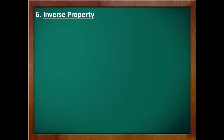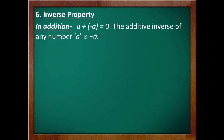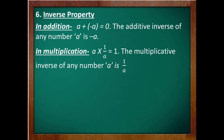The next property is inverse property. In the case of addition, the sum of any number and its additive inverse is 0, and the additive inverse of any number a is minus a. In the case of multiplication, the product of any number and its multiplicative inverse or reciprocal is 1 — that is, a multiplied by 1/a equals 1. So the multiplicative inverse of any number a is 1/a. Hopefully, it is also clear to you.